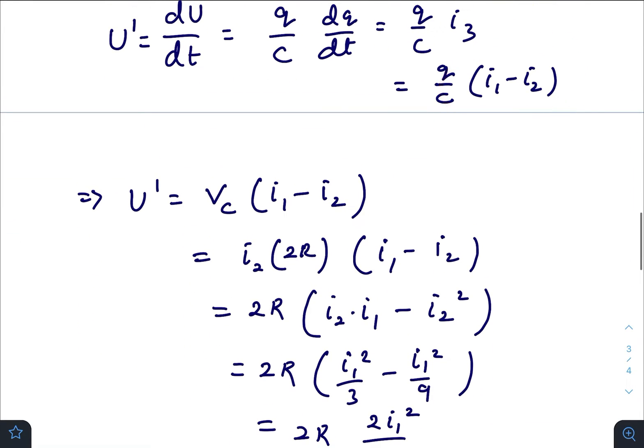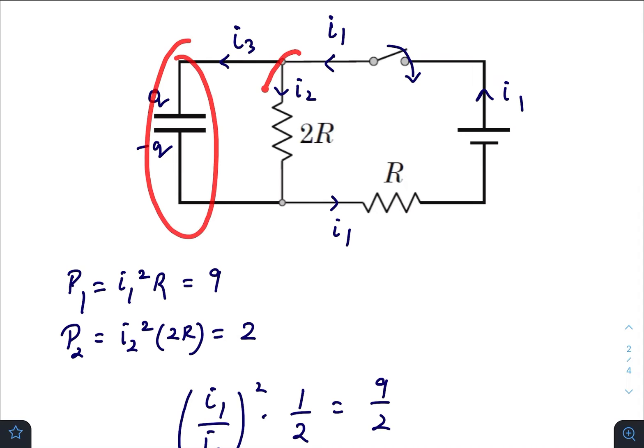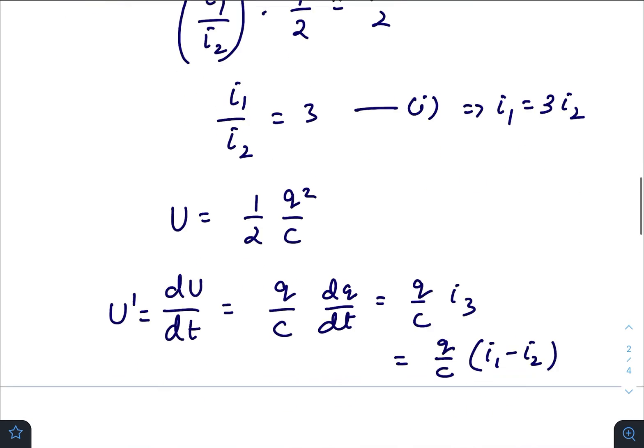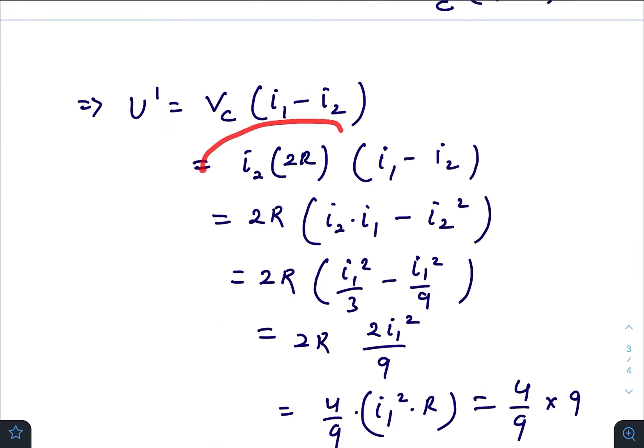So dU/dt = (Q/C)(I₁ - I₂). Q/C is the potential difference across the capacitor, which equals the potential difference across the 2R resistance. Using Ohm's law, we can write this as I₂(2R)(I₁ - I₂), which gives 2R(I₂I₁ - I₂²).